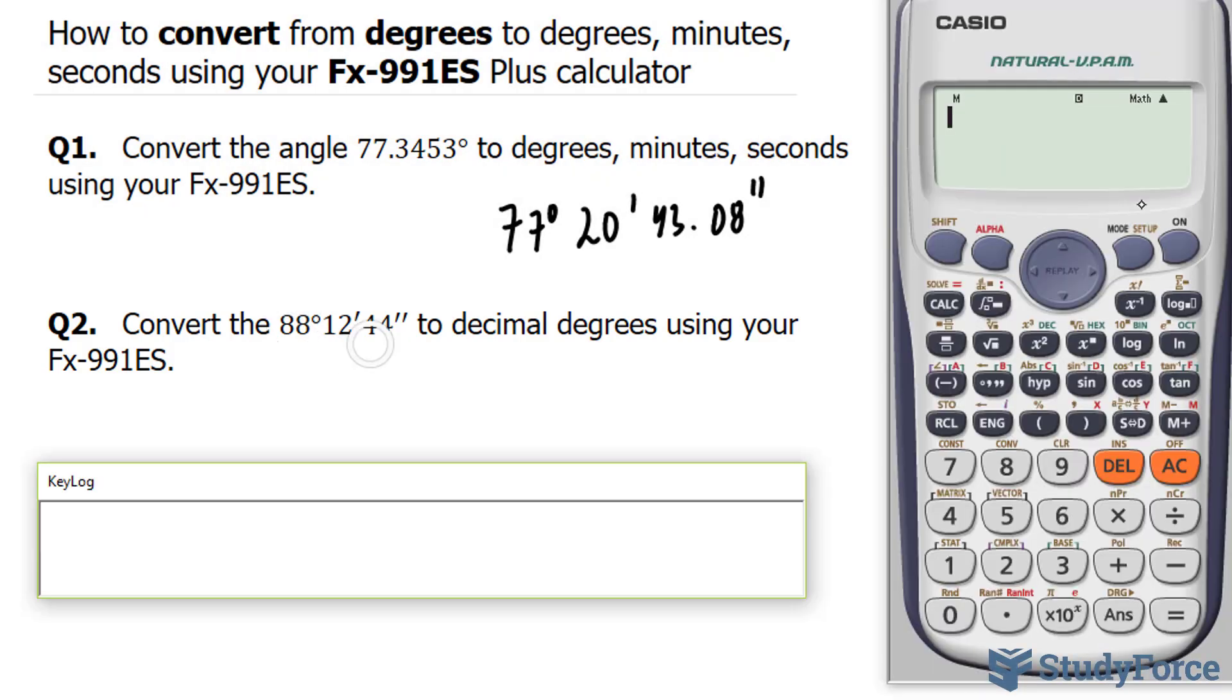To do this, to write this down in your calculator, you'll do the following. 88, this button, which represents degrees. Now, there's not a button that distinguishes minutes, seconds, so we have to use the same button for minutes and seconds.